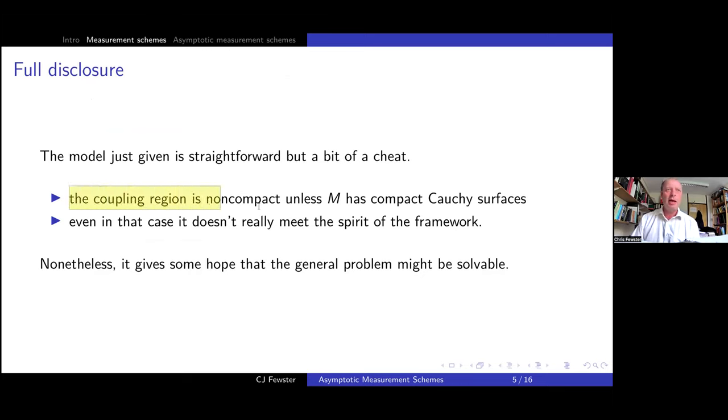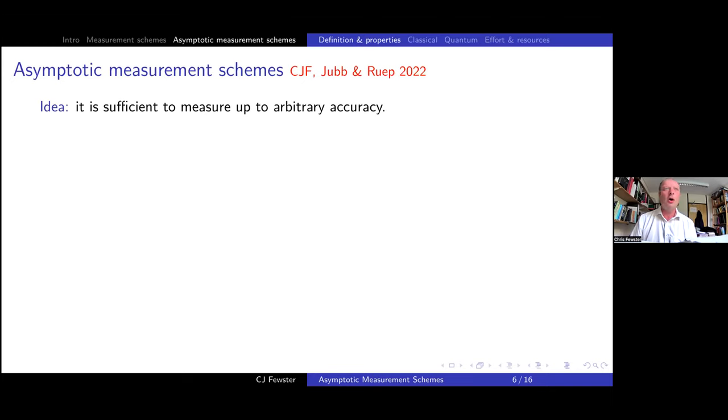So we have the conclusion that every system observable can be measured. To do that, to work out what probe observable you need, you simply write down your system observable as a product of smeared fields and you change all of the S's to P's and you've got it. So that's the proof of principle that all local system observables can be measured. Now, I'm not quite happy with this because although this is really easy and straightforward and done in a page, it's a bit of a cheat. That's because we have this non-compact coupling region. And even if we had a compact coupling region, it's not really in the spirit of the framework of locally covariant measurements. But it does give us some hope that the general problem might be solvable.